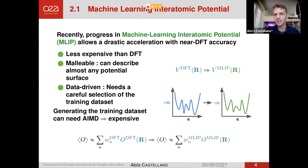Ab initio molecular dynamics is very expensive, and one way to accelerate it is through recent domains that have emerged, which is with the machine learning interatomic potential. With those potentials, we can observe a drastic acceleration to compute properties, all while keeping a near DFT accuracy. The acceleration comes from the fact that those potentials are less expensive than DFT, while the accuracy comes from the fact that they are malleable in the sense that we can describe with it almost any potential surface. And also, they are data-driven, which means that they can reproduce any data we give them, but it has the drawback that we need to be very careful into the selection of the data we give them for the training.